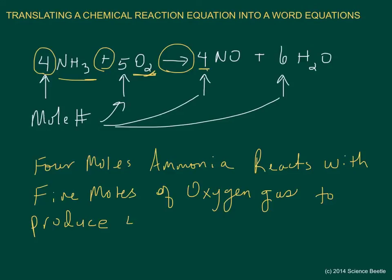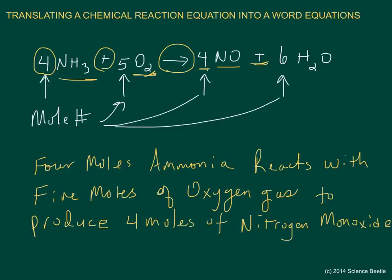Then we'll go over to the right side of the equation. We've got a four, and we'll begin with that one, so we've got four moles of this compound NO, which is nitrogen monoxide.